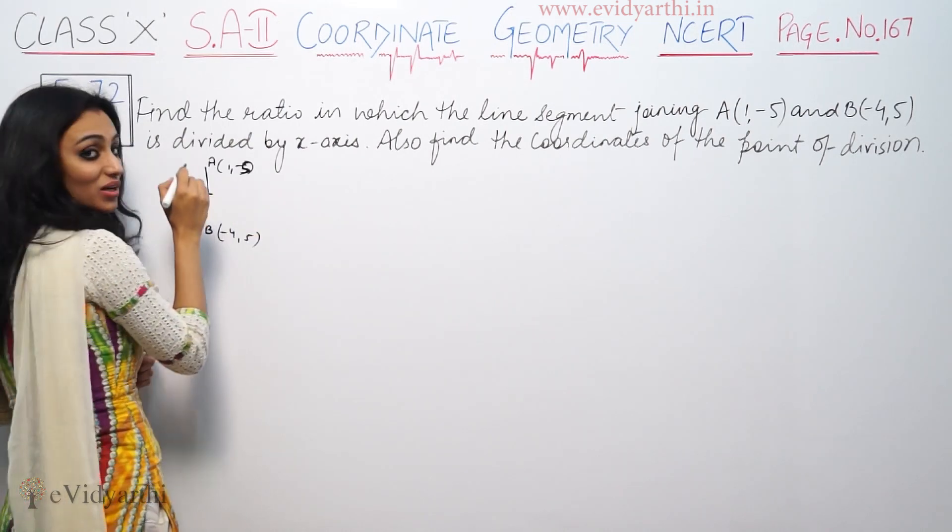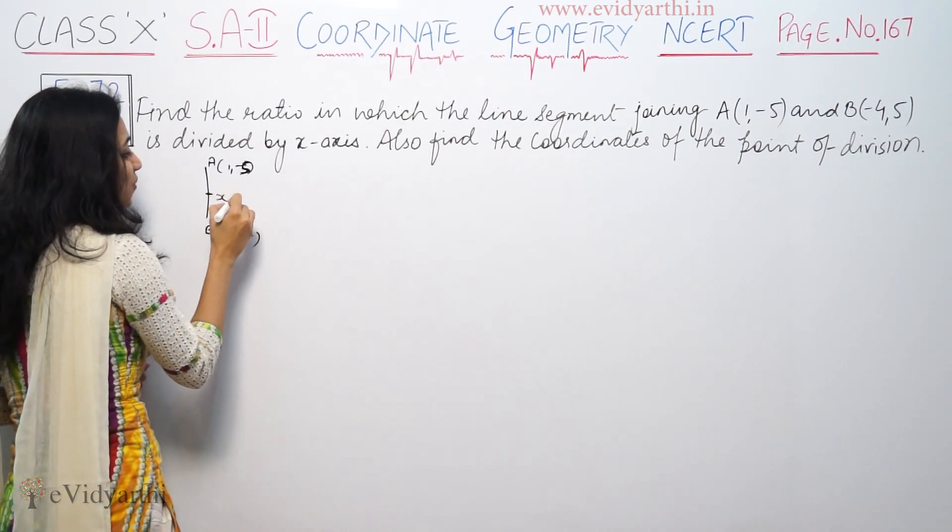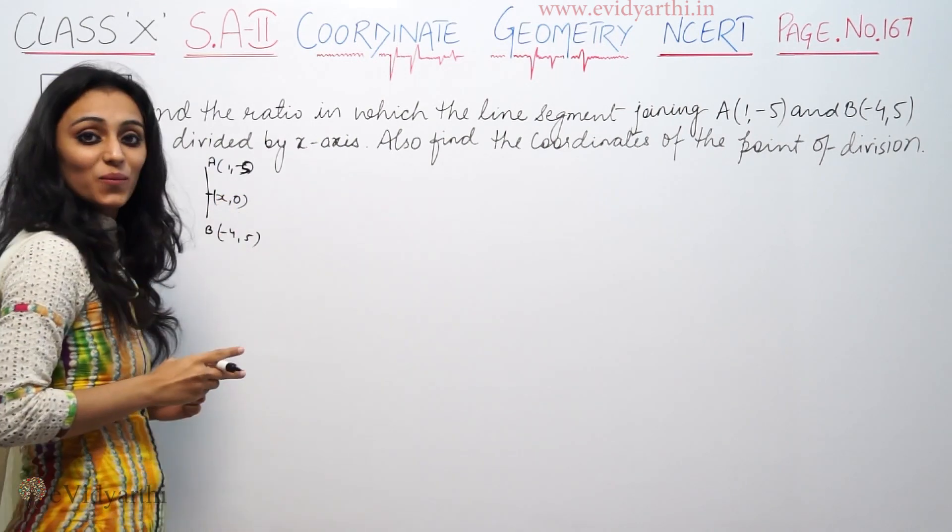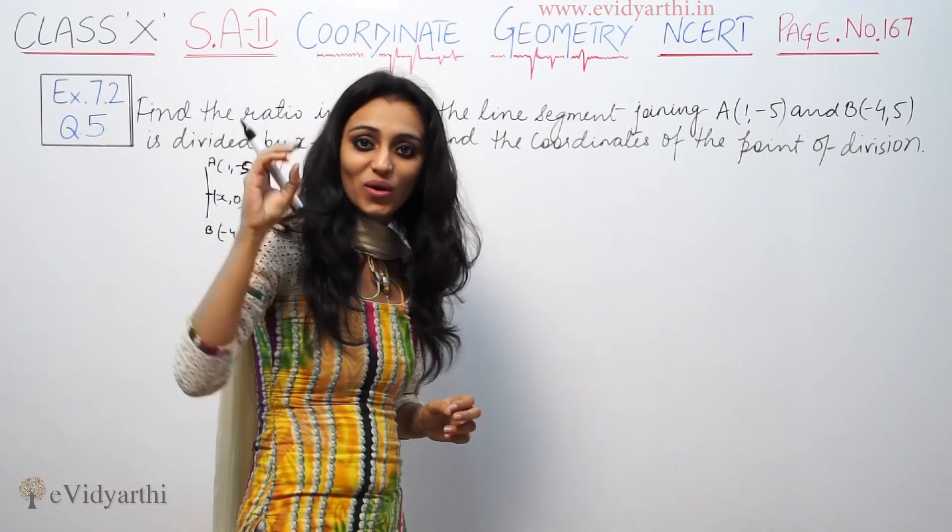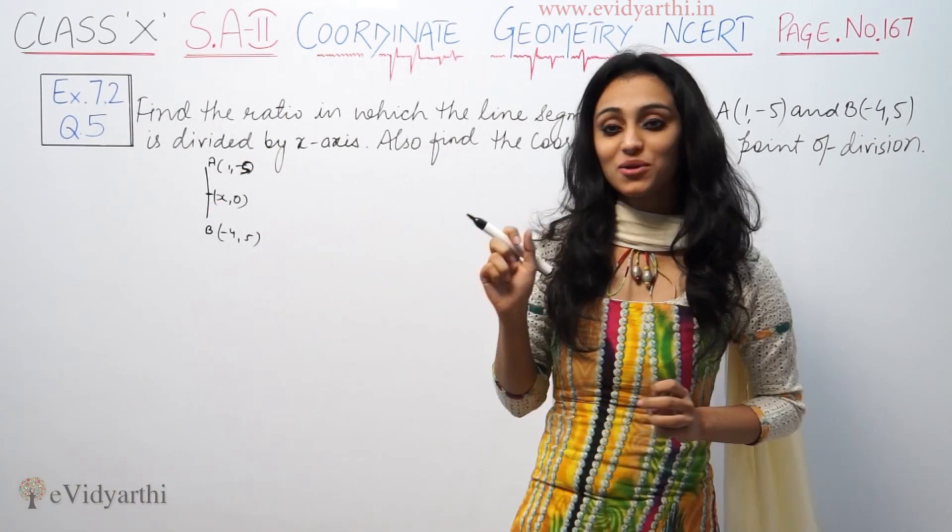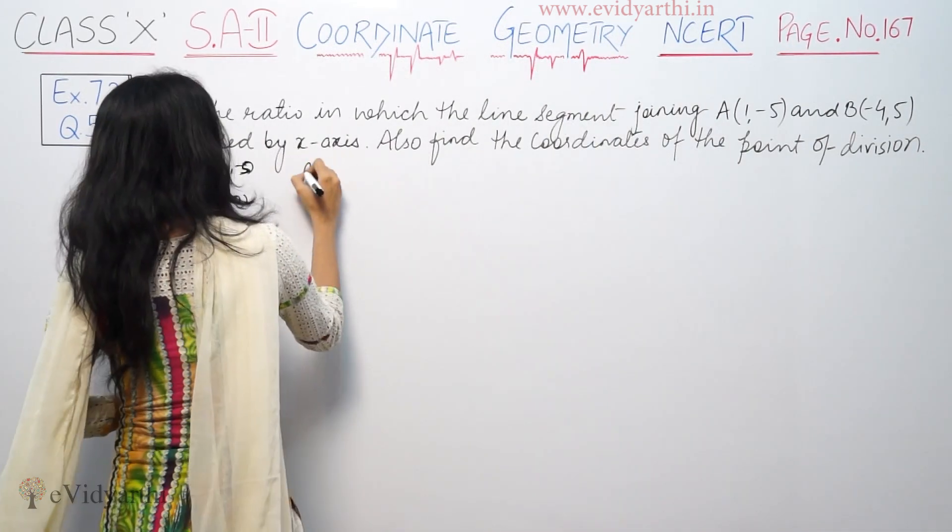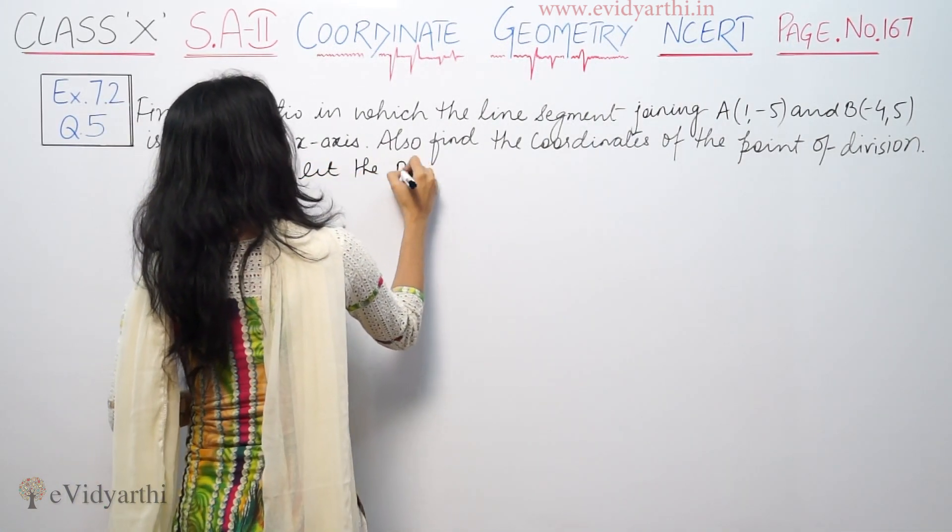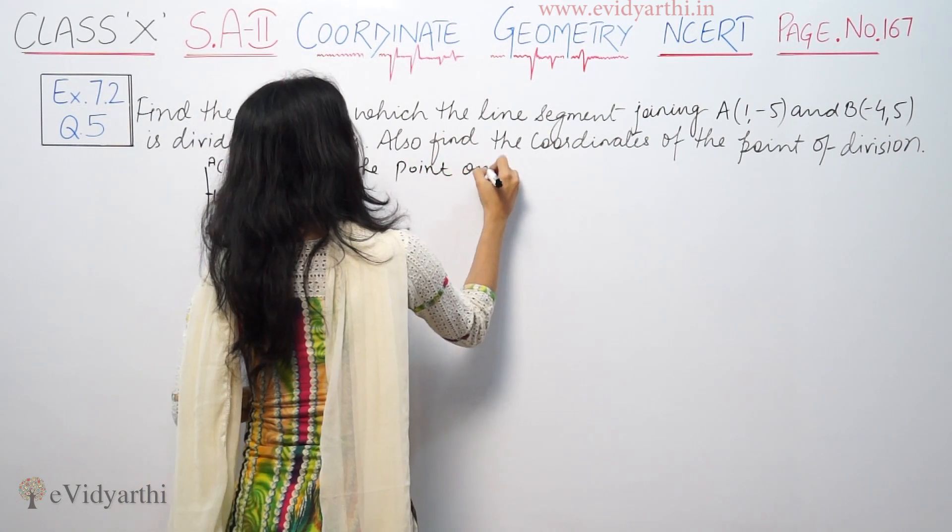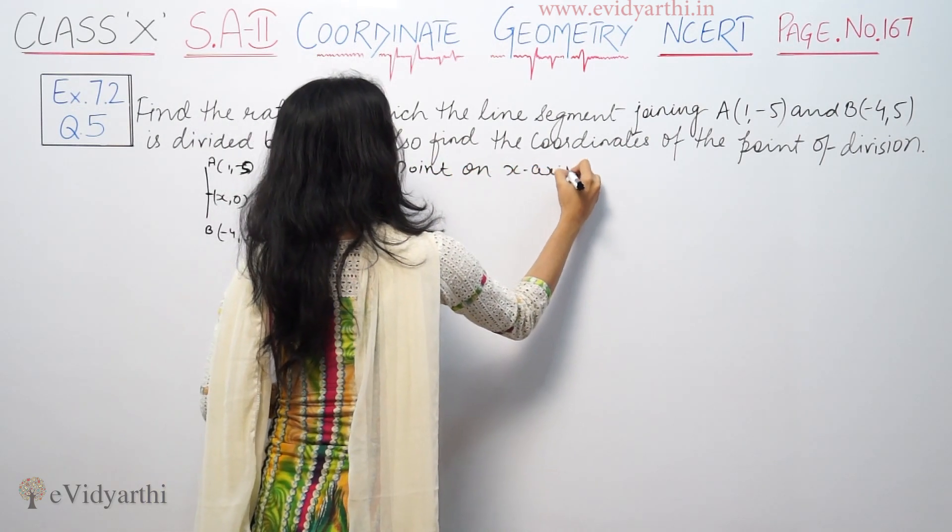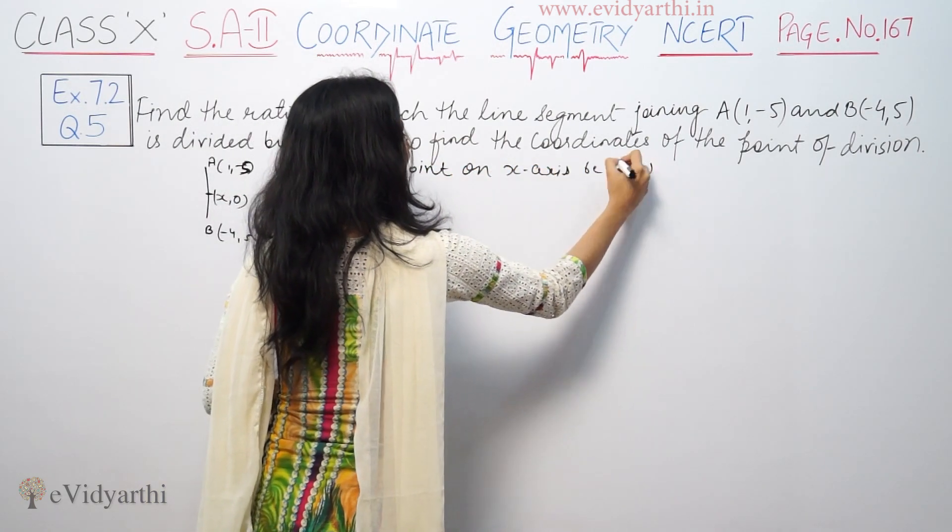The point lies on x-axis. On x-axis, the y-coordinate is zero, so let the point on x-axis be (x, 0).